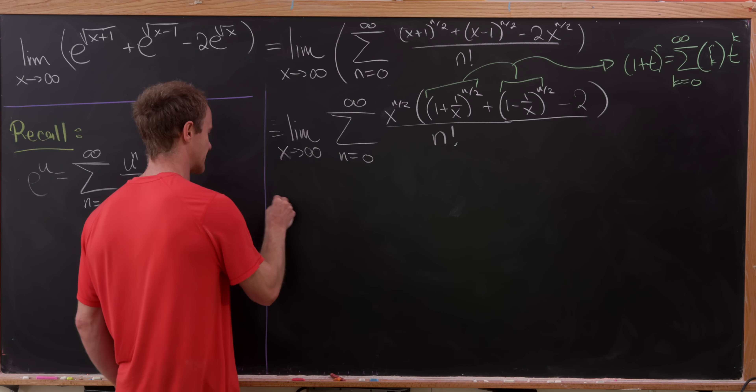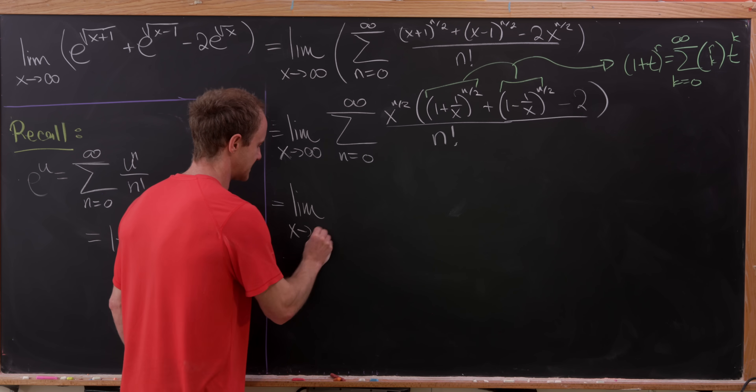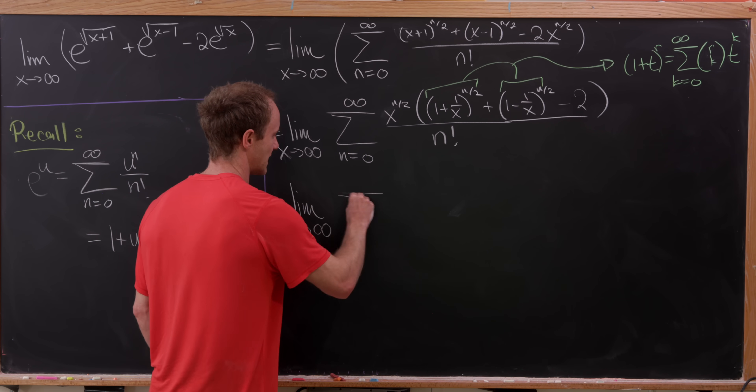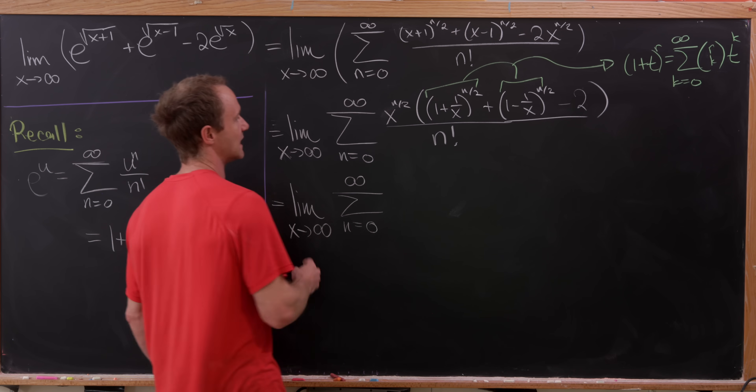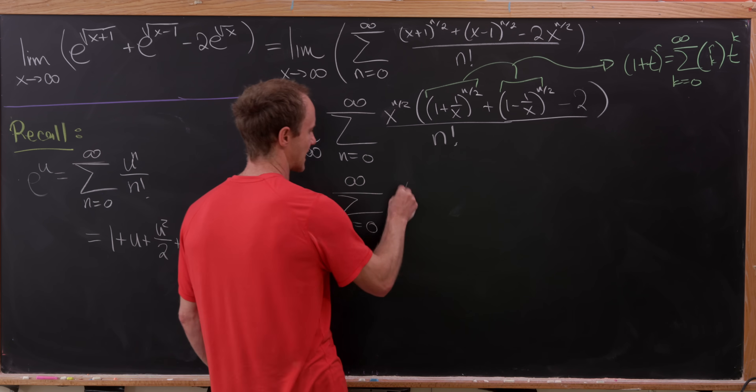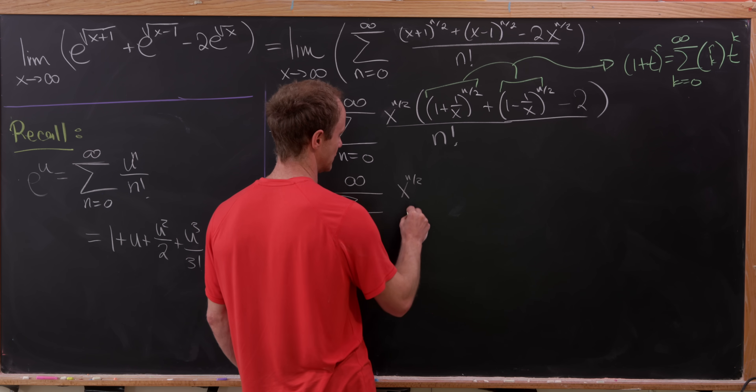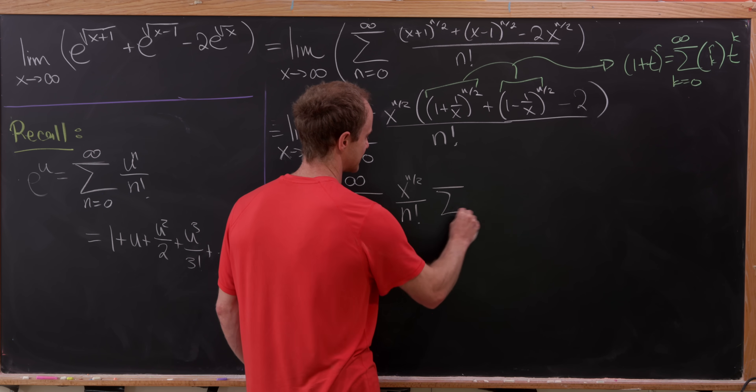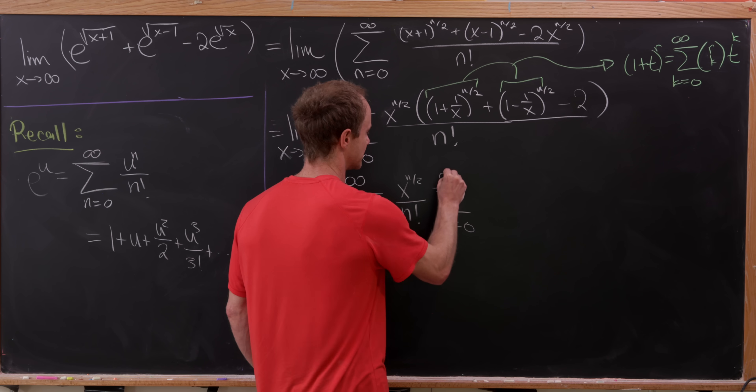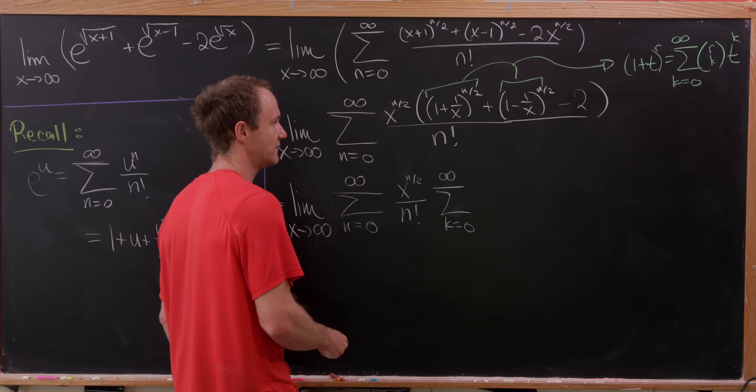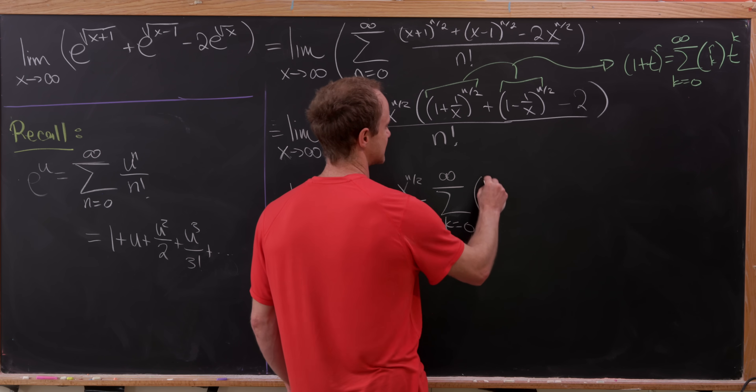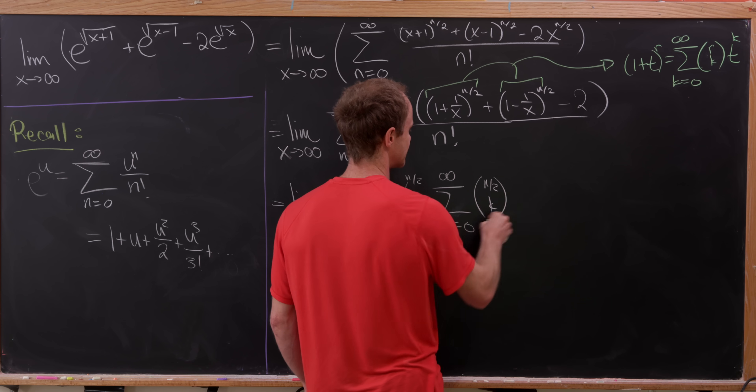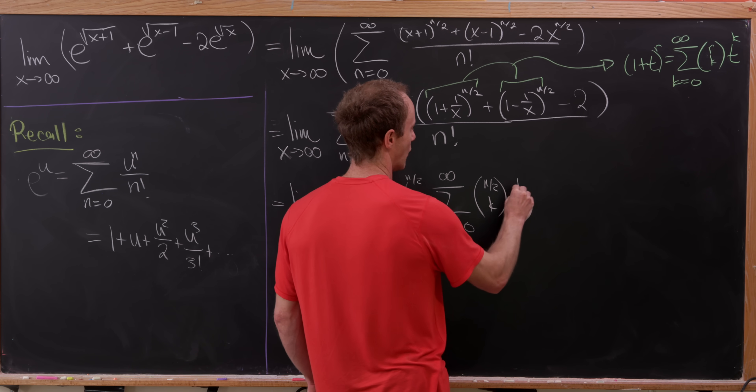Okay, so let's do that expansion. So we have our limit as x is approaching infinity. We have our sum as n goes from 0 to infinity. And then after that, what do we have? We've got our x to the n over 2 over n factorial. And then we have the sum as k goes from 0 to infinity of.